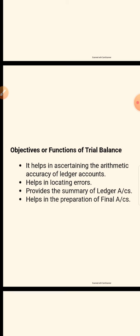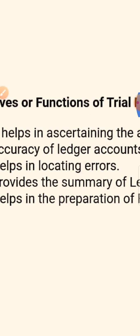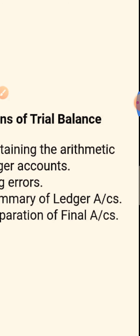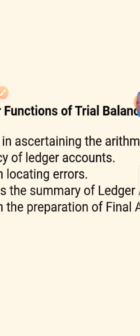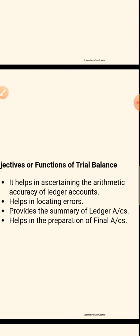Now the objectives and functions of trial balance. Objective number one: it ascertains the arithmetic accuracy of ledger accounts. In the ledgers we calculated many balances, so here we will check that arithmetic accuracy is correct or not. Second objective: it helps in locating errors.